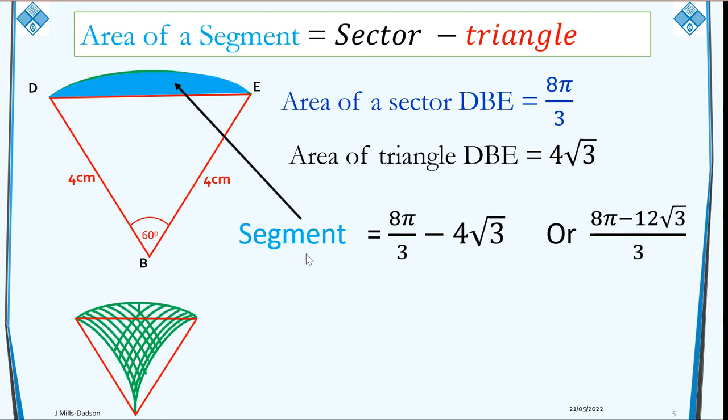Now that we've worked out just one segment, remember we said the area of the green portion is a full sector minus 2, or twice the values of one segment. And one segment is this. Therefore, we need to double it, and we will have double the segment equals (16π - 24√3)/3.